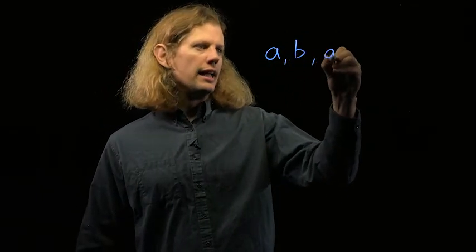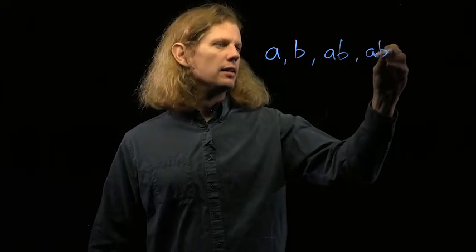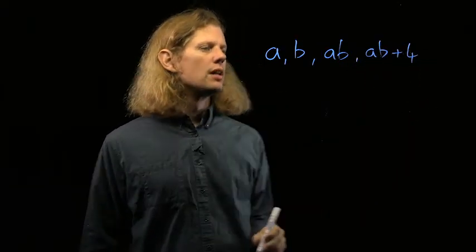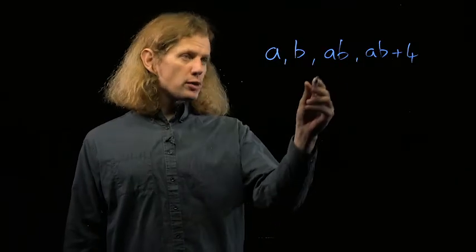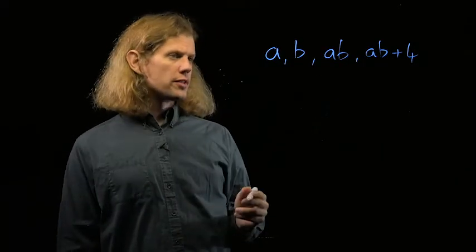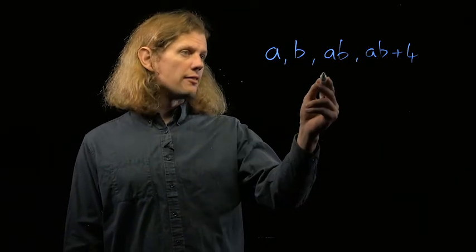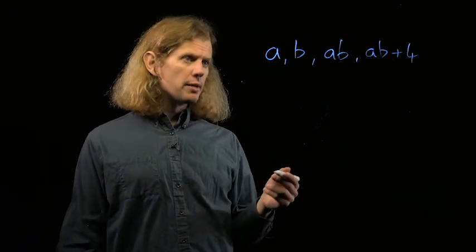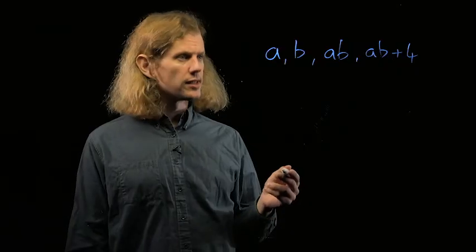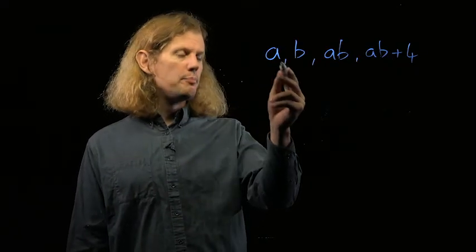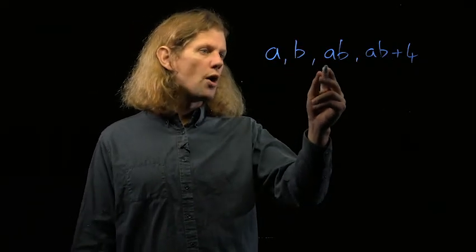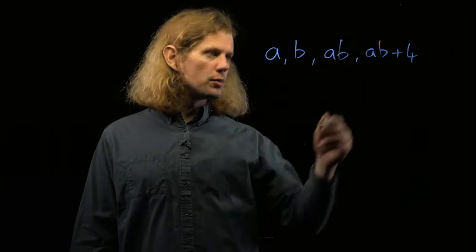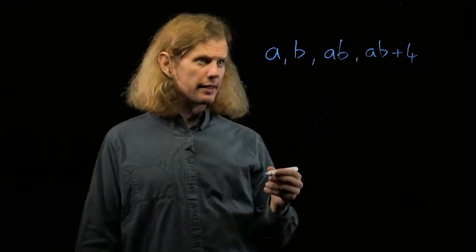So let's think about the first 4 terms. They're a, b, ab, and ab+4. Now, as we've said, there are no positive squares that differ by 4, so we can't have ab and ab+4 both square. So we see at once that there can be at most 3 squares in this sequence. So if a was a square and b was a square and 1 of ab and ab+4 was square, we'd have 3, and that would be the most we could get in these 4 terms.